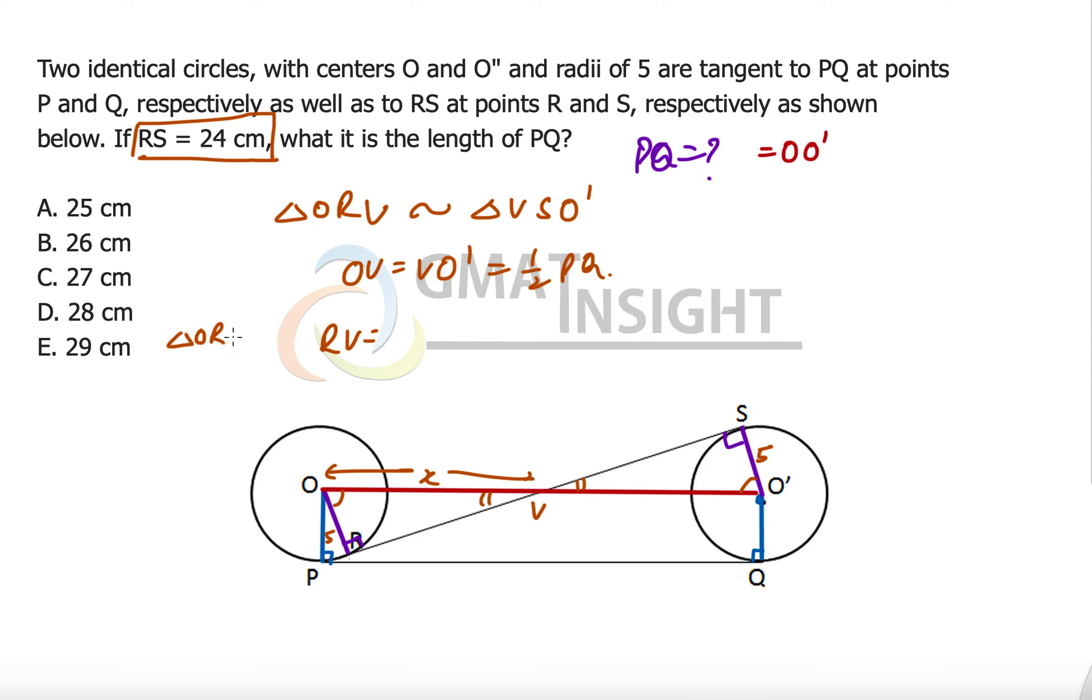So I am looking at triangle ORV and RV can be said is equal to square root of hypotenuse square which is x in this case, so x square minus the radius square which is 5 in this case. So RV is equal to square root of x square minus 5 square.